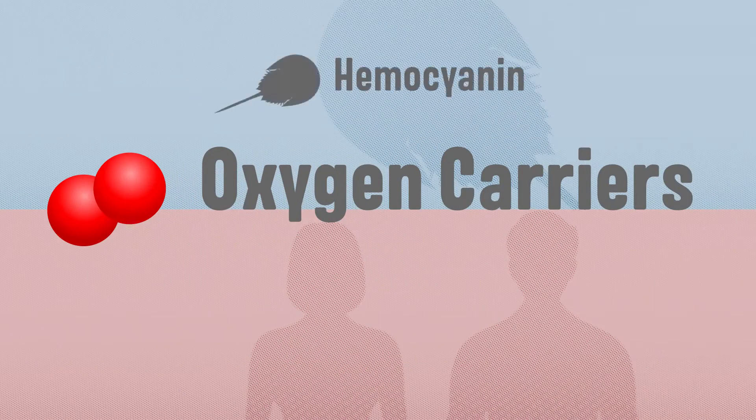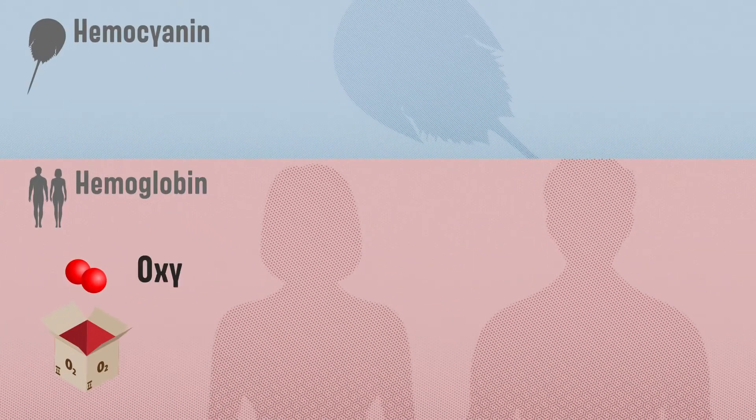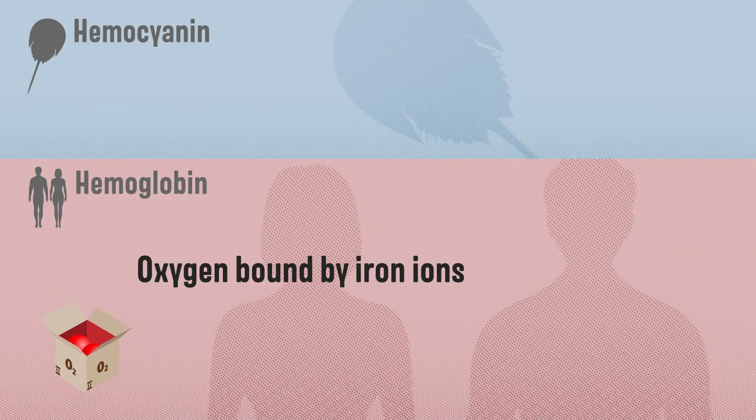Now, let's take a look at our own oxygen carrier, haemoglobin. Oxygen is reversibly bound by iron ions.